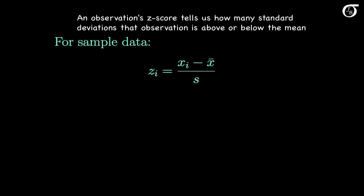A positive z-score means the observation is greater than the mean, and a negative z-score means the observation is less than the mean. A little later on we'll discuss z-scores in the setting where we know the population parameters, and then the z-score will be of similar form, but we will use the population mean and population standard deviation in the formula. We'll use this form a little later on, but for now we'll focus mainly on the sample version.